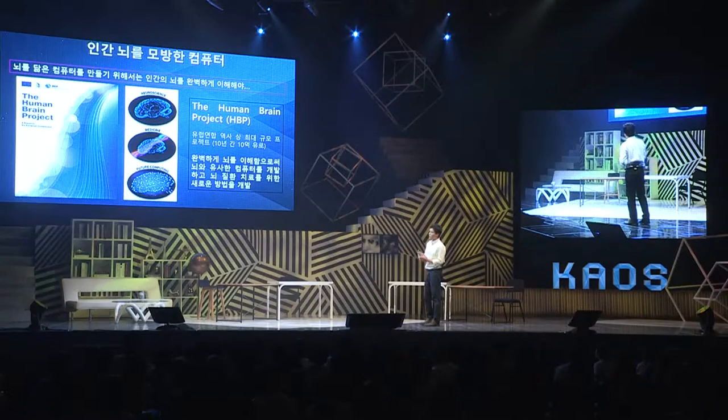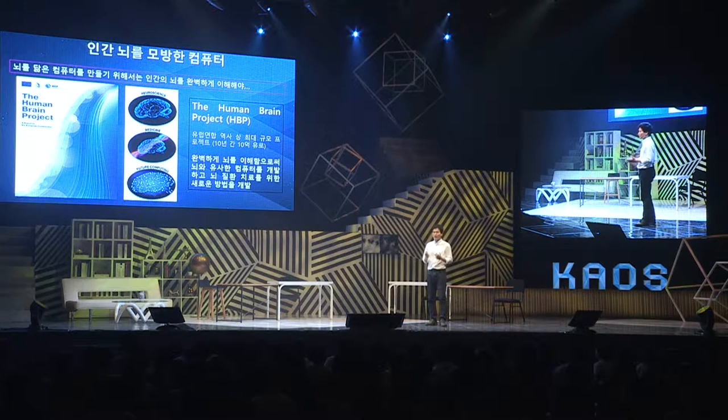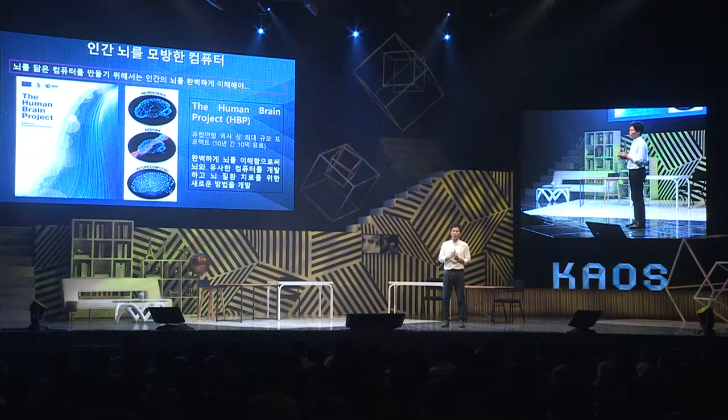사실 뇌를 닮은 컴퓨터를 만들기 위해서는 인간의 뇌를 좀 더 잘 이해해야 됩니다. 그래서 2013년에는 유럽연합에서 단일 프로젝트로는 역사상 가장 큰 규모의 프로젝트가 시작됩니다. 그 프로젝트의 이름은 휴먼 브레인 프로젝트입니다. 이 프로젝트의 목적은 완전하게 뇌를 이해하고, 그 이해를 바탕으로 뇌를 모방하는 컴퓨터를 만든 다음, 그 컴퓨터에 인위적으로 버그를 심고 이 버그를 고치는 것입니다. 우리는 아직까지 뇌질환이 왜 생기는지, 어떻게 치료하는지 모릅니다. 사람의 뇌를 그대로 모방한 컴퓨터에 버그를 심어놓으면 그게 바로 뇌질환이 되는 거죠. 이 버그를 잡는 과정에서 뇌질환을 치료할 수 있는 실마리를 찾을 수 있지 않을까라는 목적에서 어마어마한 돈을 투자한 저 프로젝트를 시작했습니다.